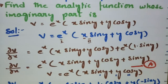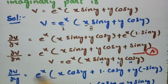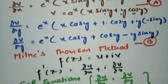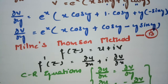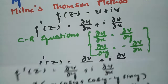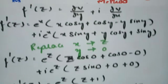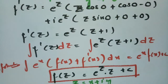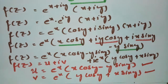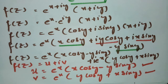In summary: when the imaginary part is given, first take ∂v/∂x (Equation A) and ∂v/∂y (Equation B). Using the Milne-Thomson method, write f'(z) = ∂v/∂y + i·∂v/∂x, substitute the two equations, replace x by z and y by 0, then integrate to get f(z). Optionally, substitute z = x + iy to separate real and imaginary parts. I hope you understand — please share and subscribe!